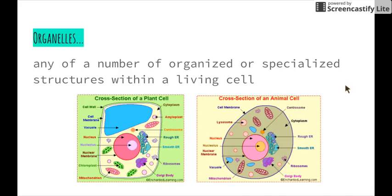So, what are organelles? We've now looked at microscopes, which we can use to view organelles. When we look at the word 'organelle' we think of organs — organs are small parts of a whole system. Similarly, organelles are any of a number of organized or specialized structures within a living cell. These include the cell membrane, nucleus, endoplasmic reticulum, Golgi body, and mitochondria — all organelles with specialized jobs within either plant or animal cells.